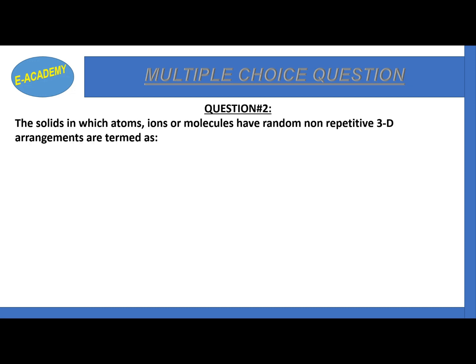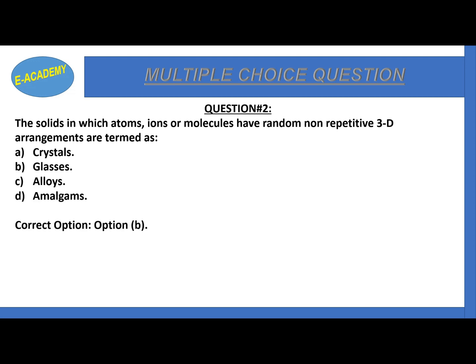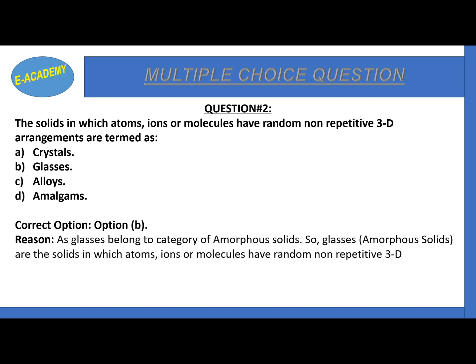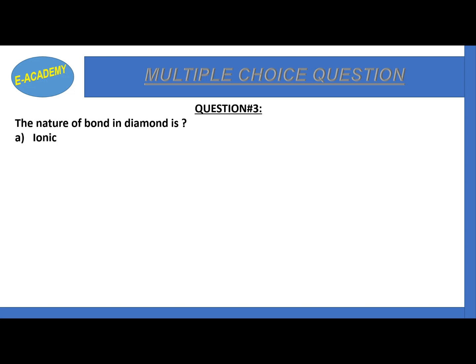Question number 2: Solids in which atoms, ions and molecules have random, non-repetitive 3D arrangements are termed as? The correct option is B: glasses. Glasses are the solids in which atoms, ions and molecules have random, non-repetitive 3D arrangement.